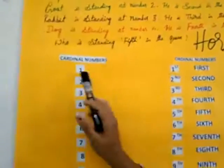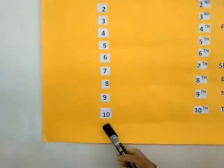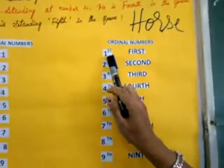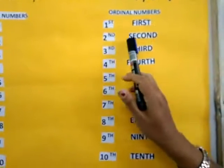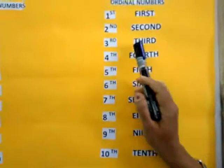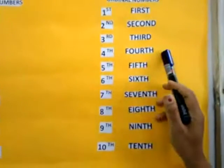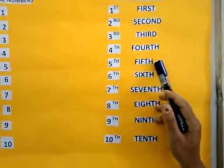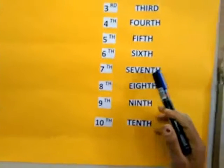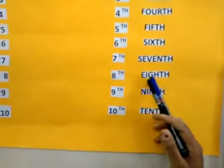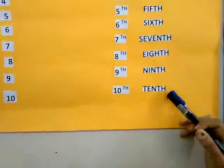Cardinal numbers are: 1, 2, 3, 4, 5, 6, 7, 8, 9, 10. Ordinal numbers define the position or order of something in a series: first (F-I-R-S-T), second (S-E-C-O-N-D), third (T-H-I-R-D), fourth (F-O-U-R-T-H), fifth (F-I-F-T-H), sixth (S-I-X-T-H), seventh (S-E-V-E-N-T-H), eighth (E-I-G-H-T-H), ninth (N-I-N-T-H), and tenth (T-E-N-T-H).